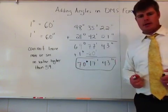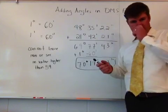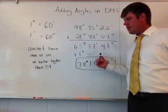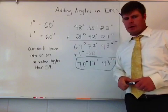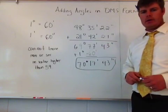I get 43 seconds still, add one degree and I get 70 degrees. So the final answer is 70 degrees, 17 minutes, and 43 seconds. That's how you add angles in degrees, minutes, and seconds.